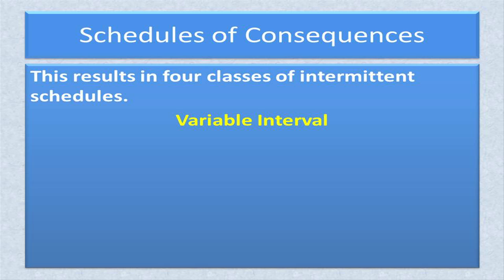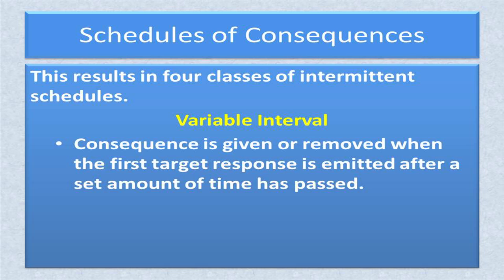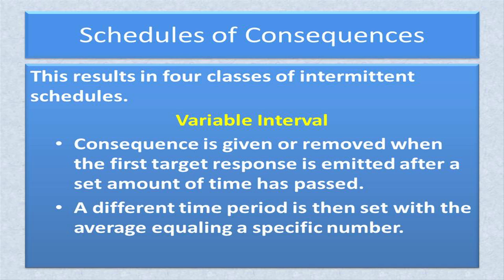The second schedule is a variable interval schedule. In this schedule, a consequence is given or removed when the first target response is emitted after a set amount of time has passed. A different period of time is then set before the observer begins to look for the target behavior again. The different time periods will average to a specific number — five minutes, ten minutes, two weeks, something like that.